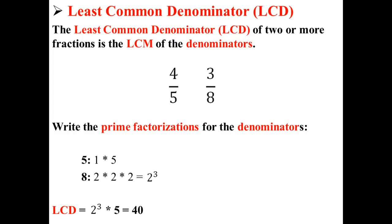We multiply these two prime factorizations to find our least common denominator. So our least common denominator is equal to 2 to the third times 5, or 40. The least common denominator for 4 over 5 and 3 over 8 is 40.